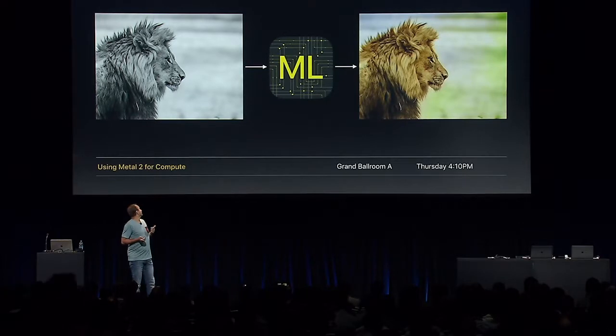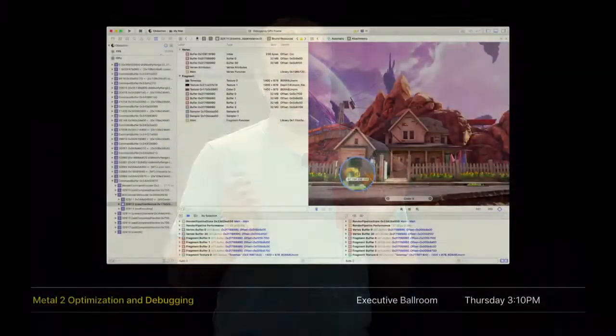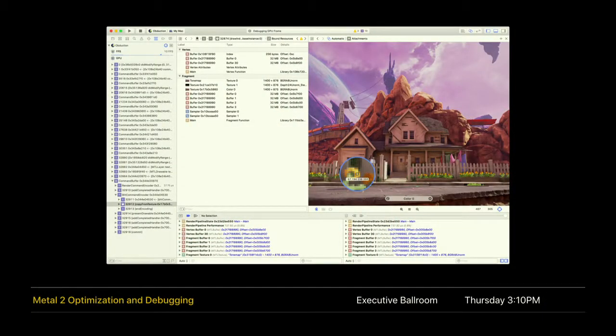With Metal 2, you can use Metal performance shaders to utilize the power of the GPU for machine learning on both desktop and mobile devices. We have a session on Thursday where you'll learn about the machine learning primitives and the image processing primitives in our Metal performance shaders. Our tools have also seen the biggest advancement yet with Metal tools. You'll be able to debug your applications quicker, drill down to your problems easier, and we are exposing GPU performance counters to help you find hotspots faster.